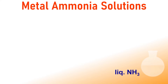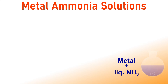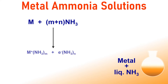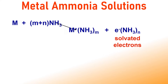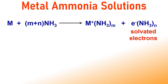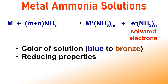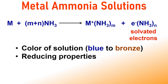The metals dissolved in liquid ammonia produce deep blue-colored solutions that can turn gold-bronze at higher metal concentrations. The color of the solution is because of formation of solvated electrons, which are also responsible for the strong reducing properties of metal ammonia solutions.